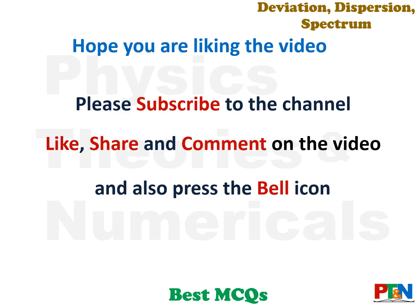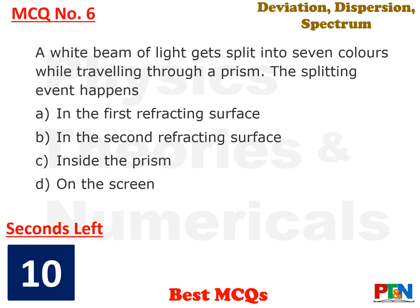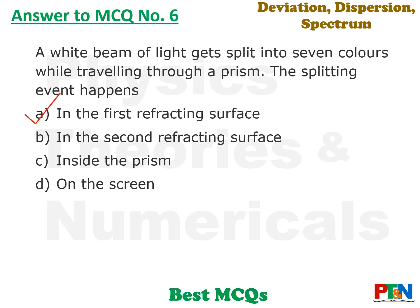Hope you are liking this video. Please subscribe to the channel, like, share and comment on the video and press the bell icon. Next MCQ: a white beam of light gets split into seven colors while traveling through a prism. Where does the splitting event take place — first refracting surface, second refracting surface, inside the prism, or on the screen? Ten seconds time. Time is up. The answer is option A — this dispersion, the splitting of light, takes place at the first refracting surface only. At the second refraction it gets widened and becomes more visible.